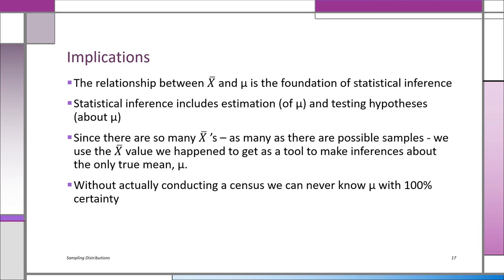To remind you what we said before: this topic is very important for the rest of this intro to statistics course because it has implications for statistical inference. It's all about the relationship between x-bar and mu. Mu is the parameter of the population — we don't have the population in front of us, so we don't know mu. Without conducting a census we're never going to know mu with 100% certainty. We have a single sample with an x-bar value, and we use that to make inferences about the population mu.